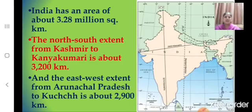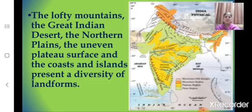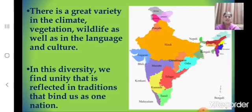India is the seventh largest country in the world in terms of area, with about 3.28 million square kilometers. India has diverse landforms — the lofty mountains, the Great Indian Desert, the Northern Plains, the uneven plateau surface, and the coasts and islands. There is also a great variety in the climate, vegetation, wildlife, as well as in the language and culture.